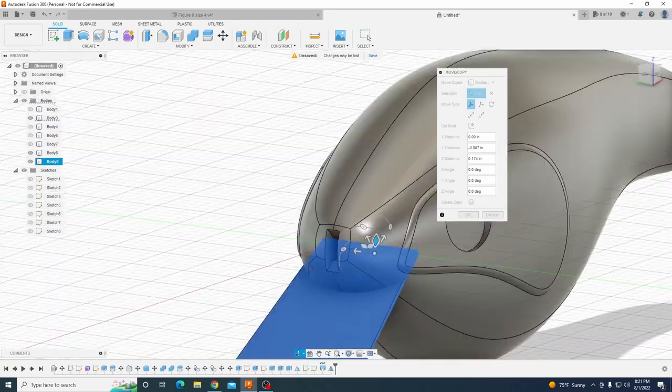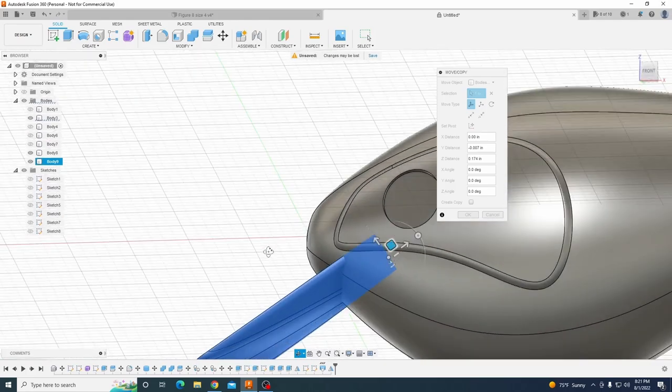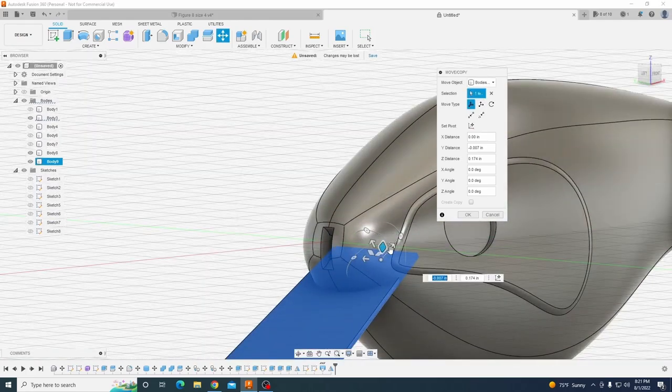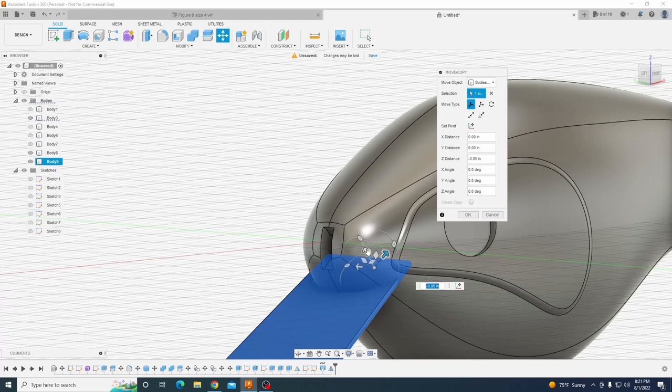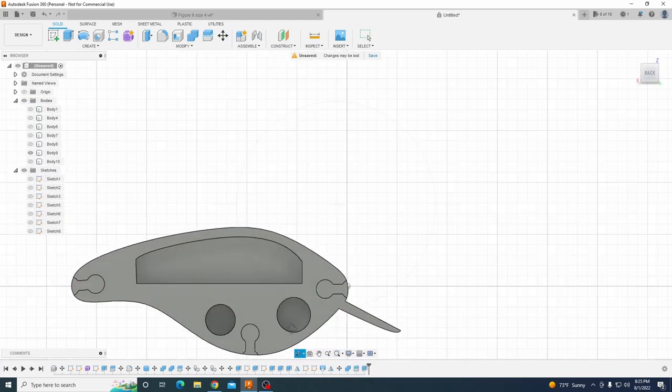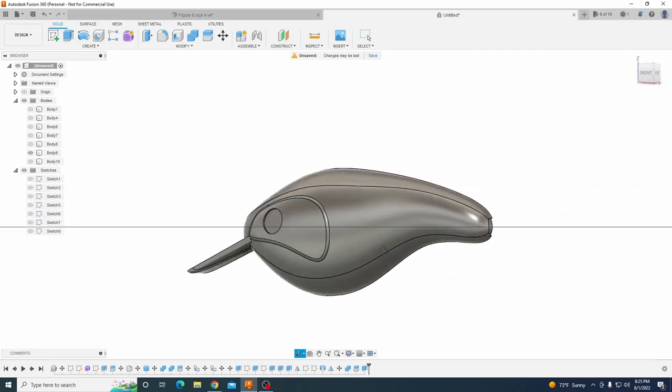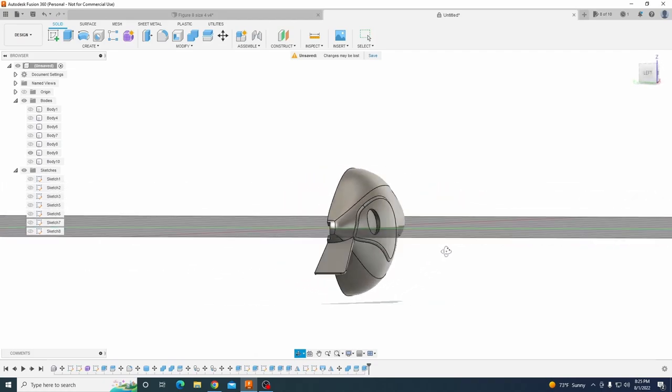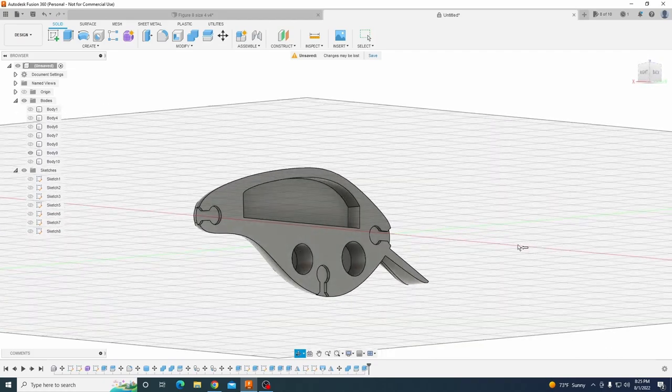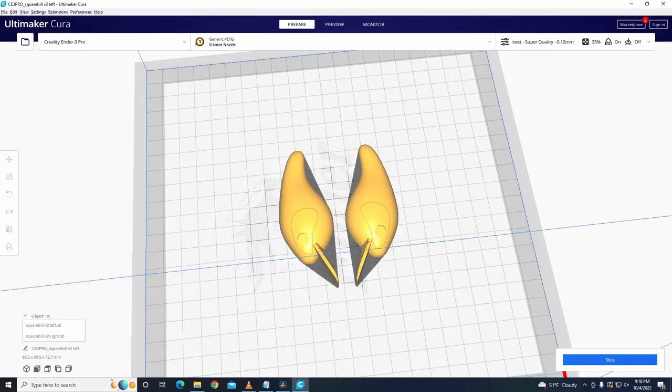So that's it for the design portion. We're going to go over some basic print instructions just so you guys print this out the same way. I want everyone to be able to print this as close to possible as I did just so the weight distribution and the density is the same that way it has the same action. And you guys of course can tune it from there but we're going to get into the print details now. For print settings we're not going to go over printer specific settings but just the settings that matter specifically for this lure.